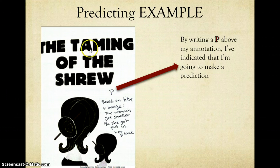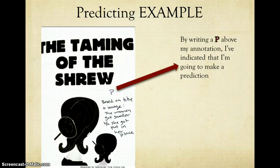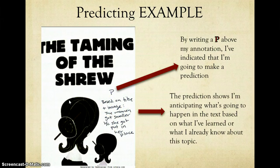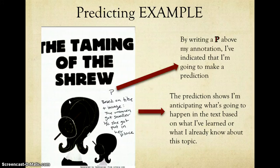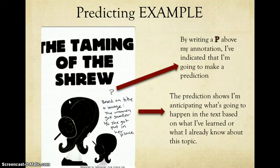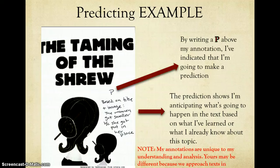So I'm using the title, Taming I know means to control, Shrew I know refers to a certain type of female and it's not necessarily a good term. So based on that title and based on the image here, this is the prediction that I came up with. So it shows that I'm anticipating what's going to happen in the text based on what I've learned or what I already know about the topic. Before I continue, I want to note again that my annotations are unique to my understanding and analysis. Yours may be different because we approach text in different ways and that's okay.